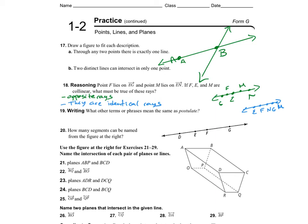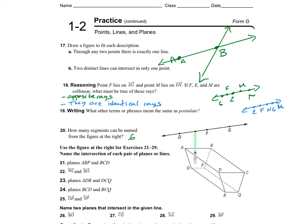For number 20, I want to count how many segments are in this figure. I have segment DG — that's one; DF — two; DE — three; EF — four; EG — five; and FG — six segments. Remember that segment DE is the same as segment ED, so we don't count duplicates.